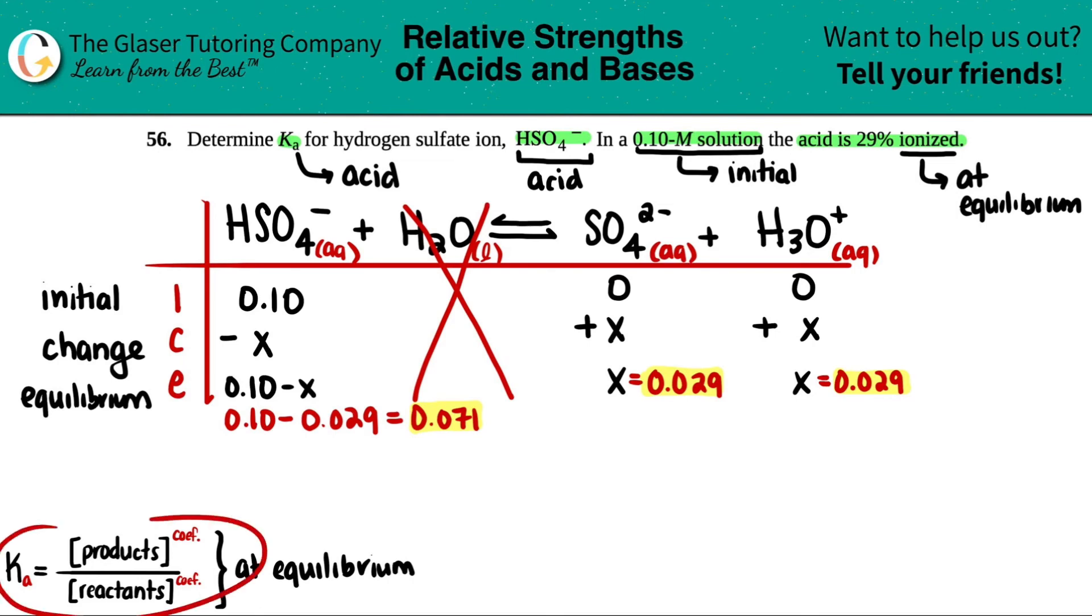We're going to use this formula because these are all at equilibrium and I have all the numbers now. Ka equals products divided by reactants, liquids aren't allowed. So two products are multiplied in this equation: SO4 2- times H3O+ divided by HSO4 minus.